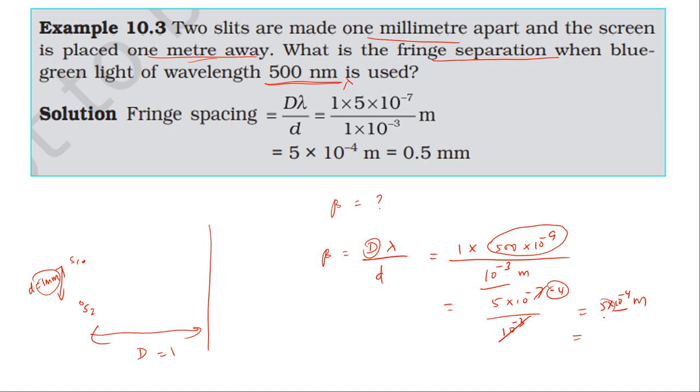This equals 0.5 times 10^-3 meter, which is 0.5 millimeter. So the fringe width is 0.5 millimeter.